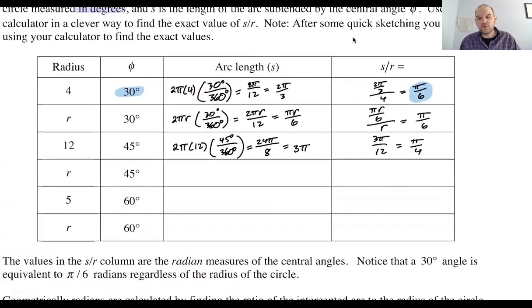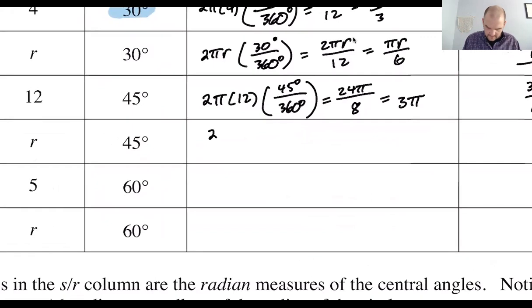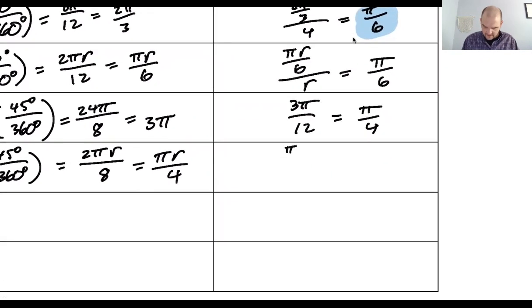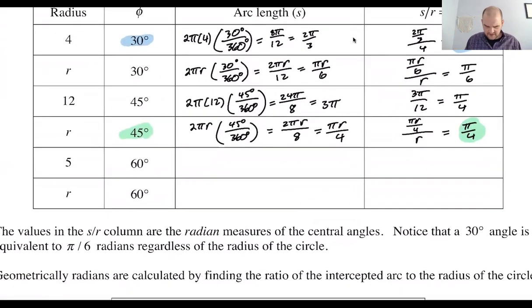Now the question becomes, does a 45 degree central angle always match up with π over 4? Let's find out. So to find out, we'll do it in general. So it'll be 2πr, and then I got 45 out of 360 is going to be 2πr divided by 8, which is πr over 4. And then I'm going to divide by r, and you can see that the r's are going to cancel out. So πr over 4 over r, π over 4. I feel like I'm actually highlighting the wrong ones. I think I should highlight the one that has r in it, because that seems like it makes more sense. So it looks like 45 degrees is going to go with π over 4.